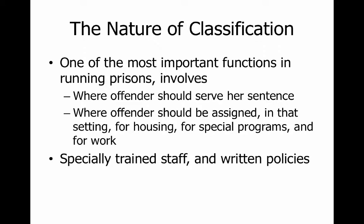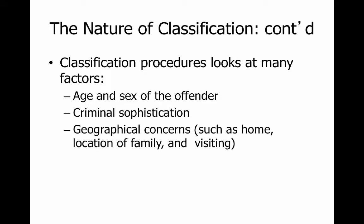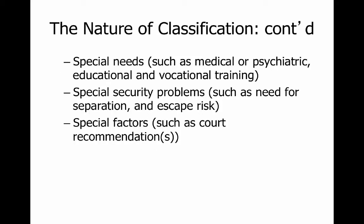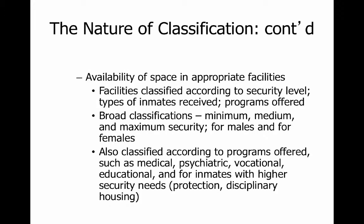In terms of classification, one of the most important functions in running prisons involves where the offender should serve their sentence and where the offender should be assigned. We're going to look at specially trained staff, written policies, age and sex of the offender, criminal sophistication, geographical concerns such as their home and location of family visits, special needs, security problems, other factors such as court recommendations, availability of space in appropriate facilities, classification according to programs offered — medical, psychiatric, those type of things.